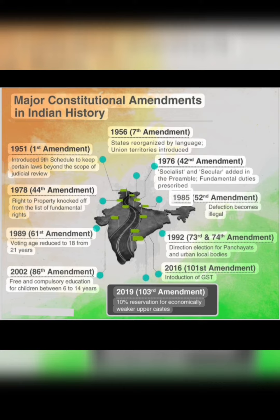1985, 52nd Amendment: defection becomes illegal.